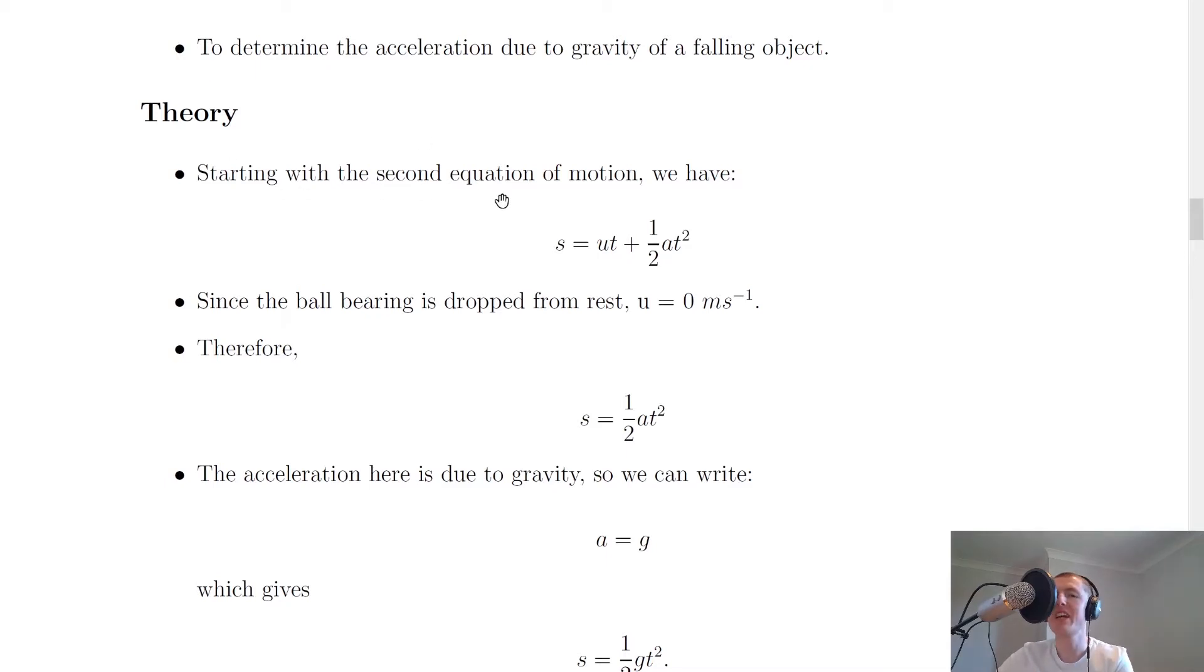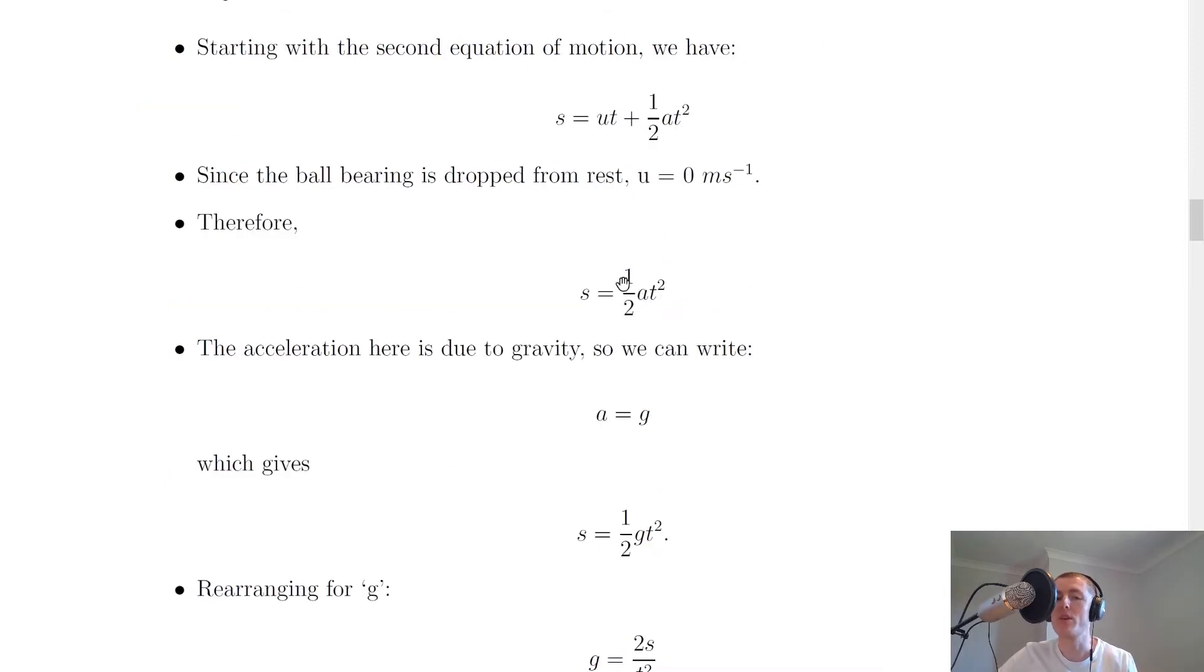So we're going to start with the second equation of motion, which is S equals UT plus a half AT squared. Now because we're going to be using a ball bearing and it's going to be dropped from rest, then that means that the initial speed or initial velocity U is equal to zero meters per second. So that's going to simplify our equation straight away for us, which gives us S equals a half AT squared. So we've got rid of this UT because U is equal to zero.